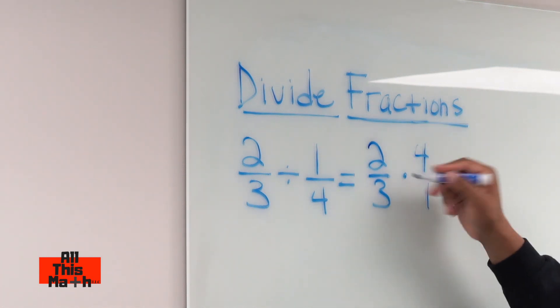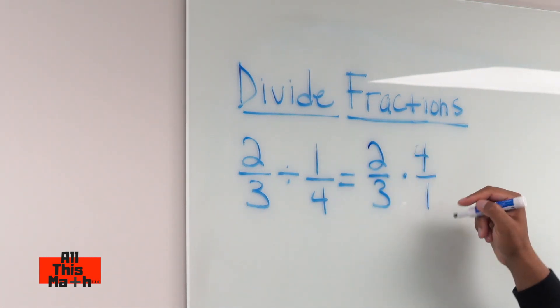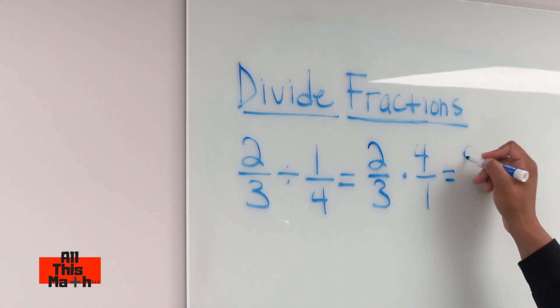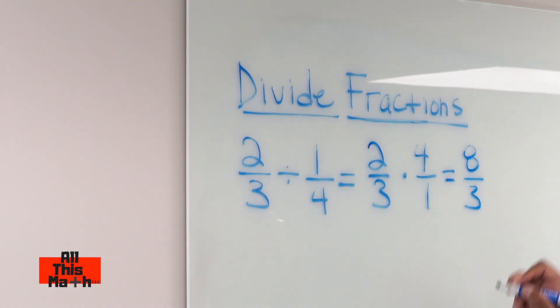If we could cross-cancel, we could if we wanted to but there's nothing to cross-cancel here. So we multiply straight across. Two times four gives us eight. Three times one gives us three and our product is eight-thirds.